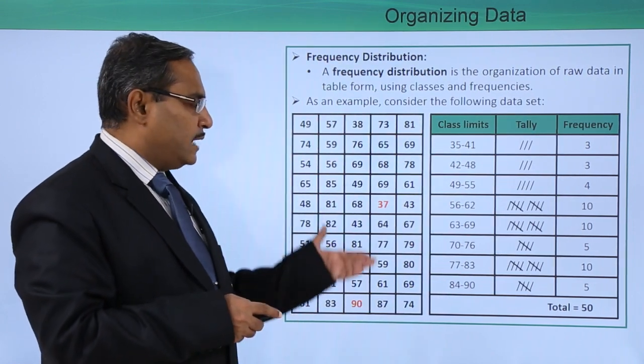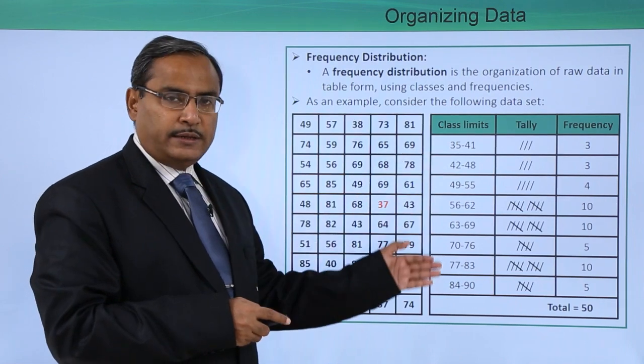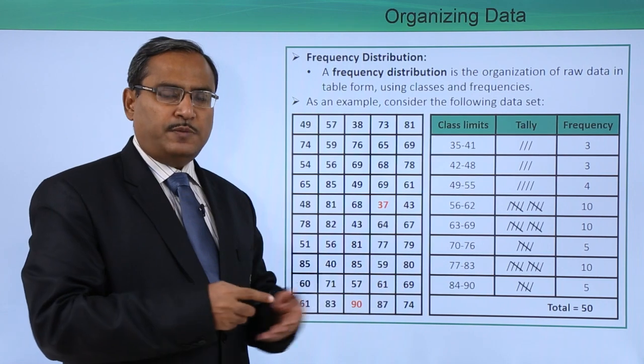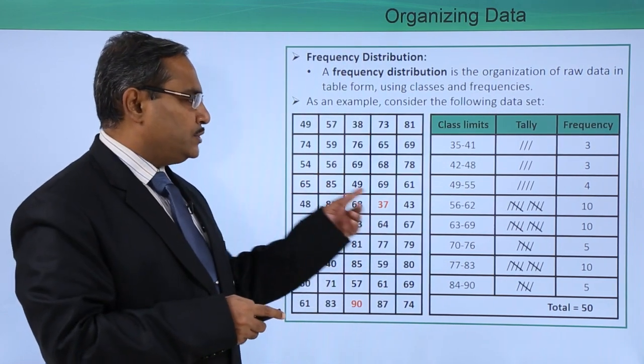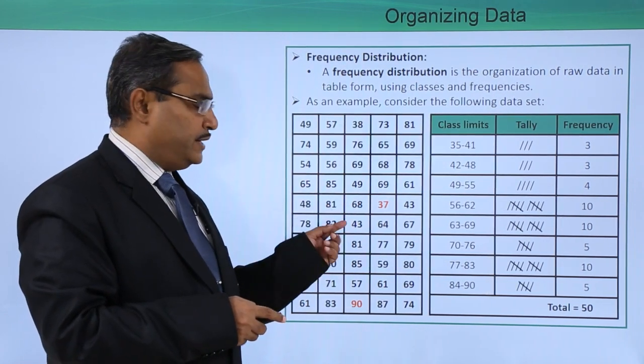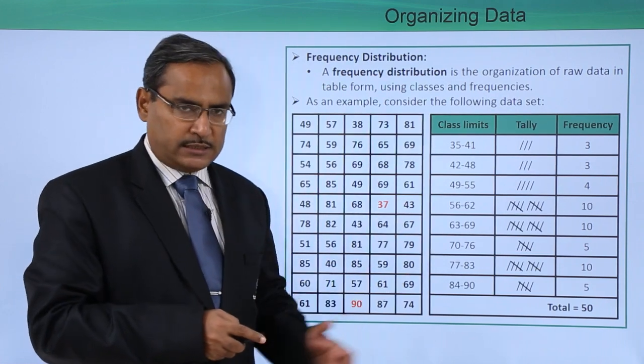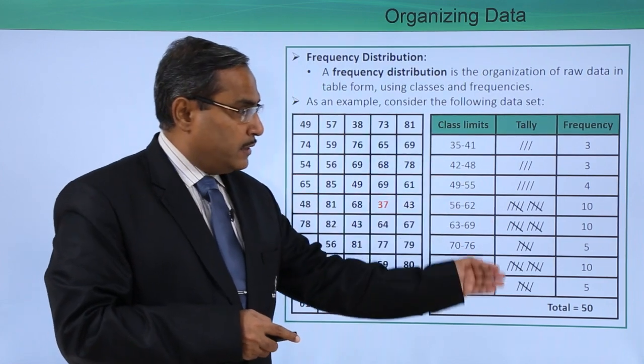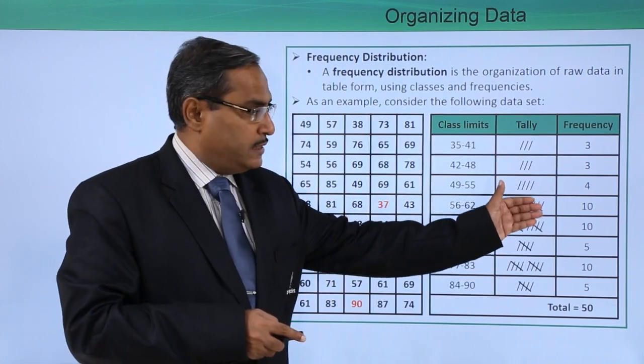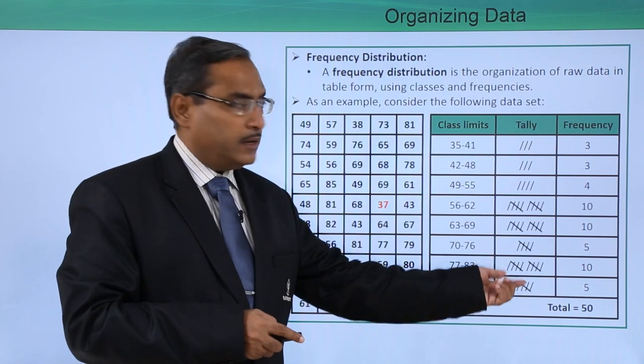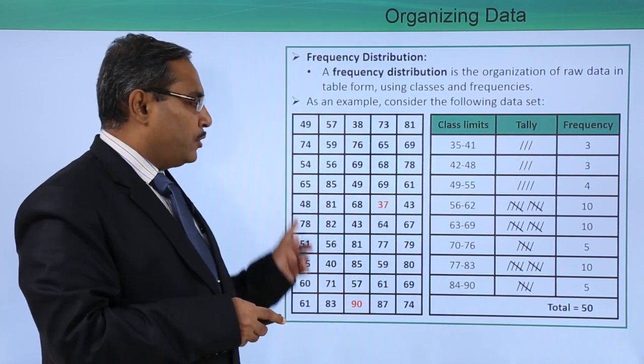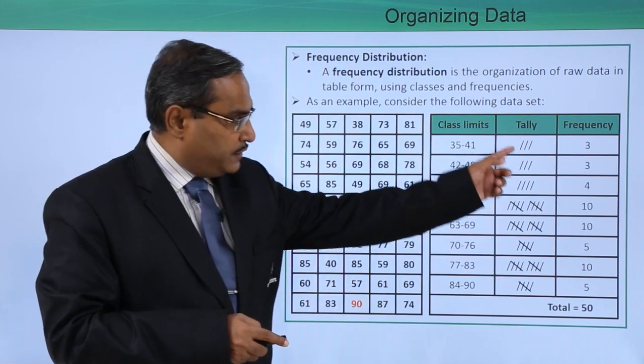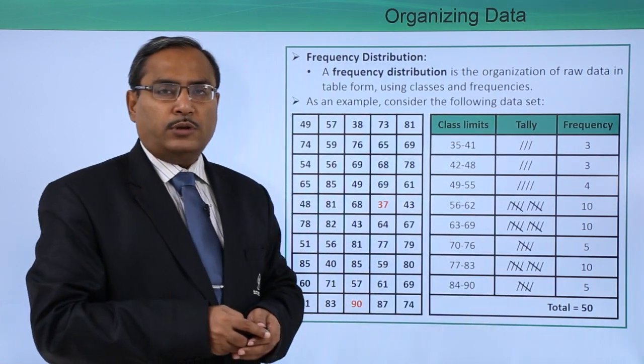Now, this is our raw set of data, and here we are having the respective class limits. You can also express this using class boundaries as I discussed. Then we shall find out which data is falling in which class limits. Accordingly, the tally mark has been produced, and from this tally mark, we have written the respective integer values against these tally marks in the frequency column. How many data points do we have? We are having here 50 data points. Obviously, the frequency sum will total 50.